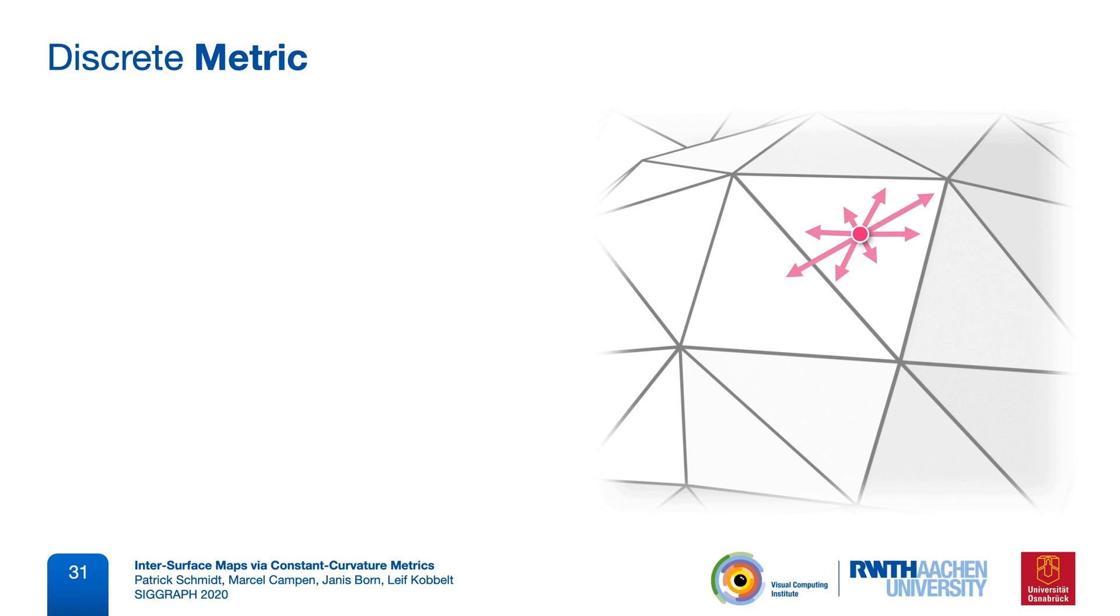On a triangle mesh, we can also view it as the intrinsic shape of each triangle. And we can represent it, for example, by storing a length for each edge. Now we can think of assigning virtual edge lengths to our mesh, and this will change how geodesics behave.